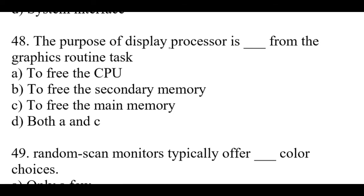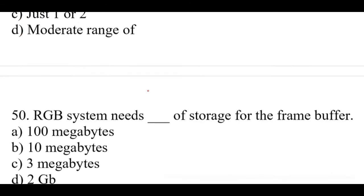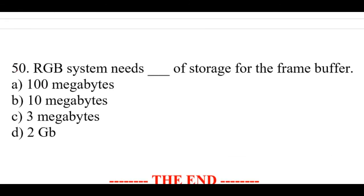Question number 48: The purpose of display processor is dash from the graphics routine task. Right option is A, to free the CPU. Question number 49: Random scan monitors typically offer dash color choice. Right option is A, only a few. Question number 50, the last question: RGB system needs dash of storage for the frame buffer. Right option is C, 3 megabytes.